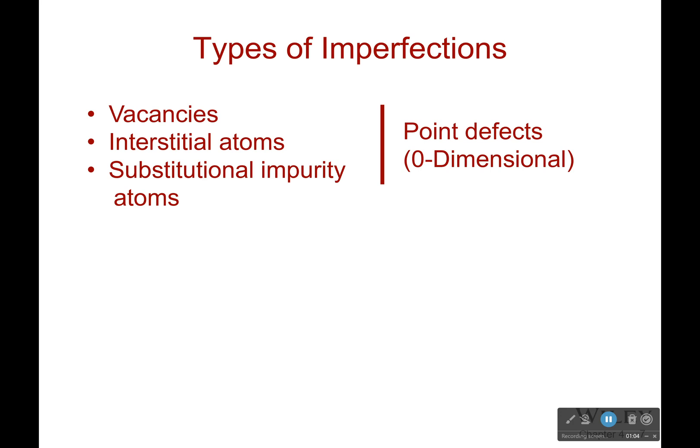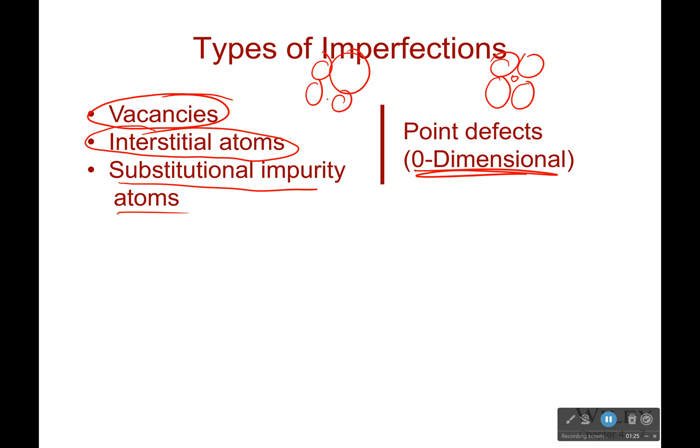There are various ones. There are what are called zero-dimensional point defects. That's a vacancy where we're missing an atom. An interstitial atom is where we have an atom in between when it shouldn't be there. So maybe it's a simple cubic, but I have a really tiny atom that fits in the middle. And finally, a substitutional impurity atom is where I have atoms, but then I suddenly have a different atom that's there that shouldn't be.